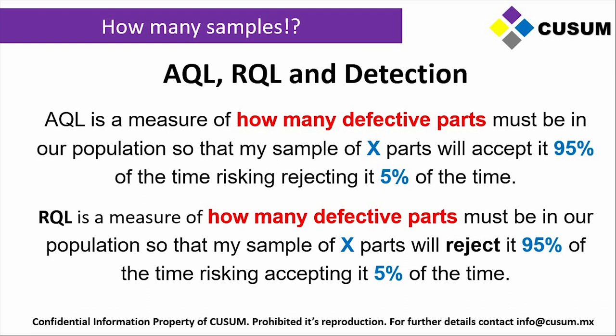RQL is a measure of how many defective parts must be in our population so that your sample will reject it 95% of the time, risking accepting it 5% of the time. This is the inverse of AQL. AQL protects the supplier from over-rejection, while RQL protects the customer by assuring there will be no more defects than those marked in the RQL.